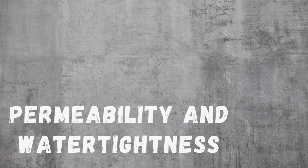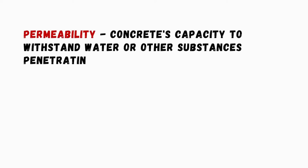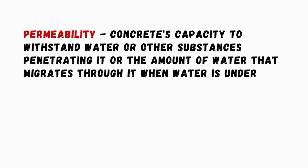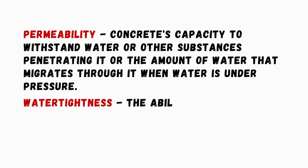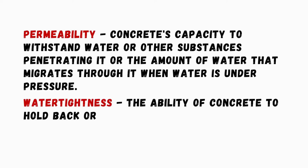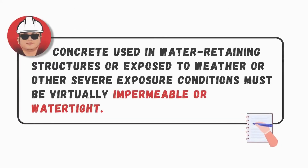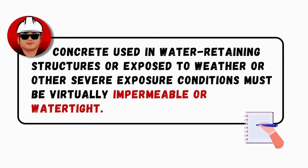Permeability and Water Tightness: Permeability is defined as the concrete's capacity to withstand water or other substances penetrating it, or the amount of water that migrates through it when water is under pressure. Water tightness is the ability of concrete to hold back or retain water without visible leakage. Concrete used in water-retaining structures or exposed to severe conditions must be virtually impermeable or watertight.